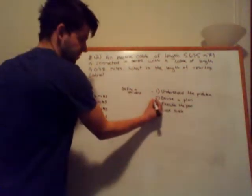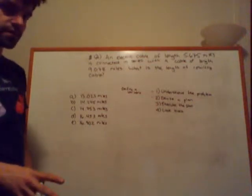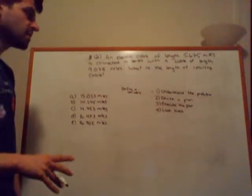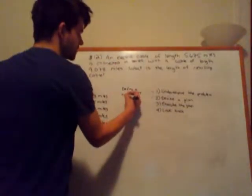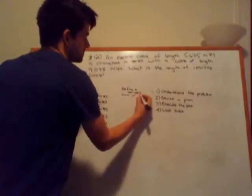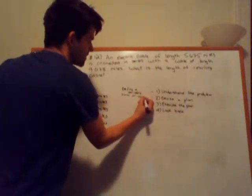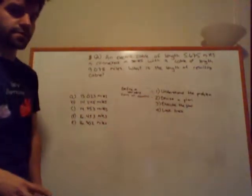The second step is to devise a plan. Devising a plan is probably the most difficult of the four steps. What it wants you to do here is to form an equation using the variables that you define in the first step. And sometimes forming the equation based off of what you're trying to solve for can be rather tricky.